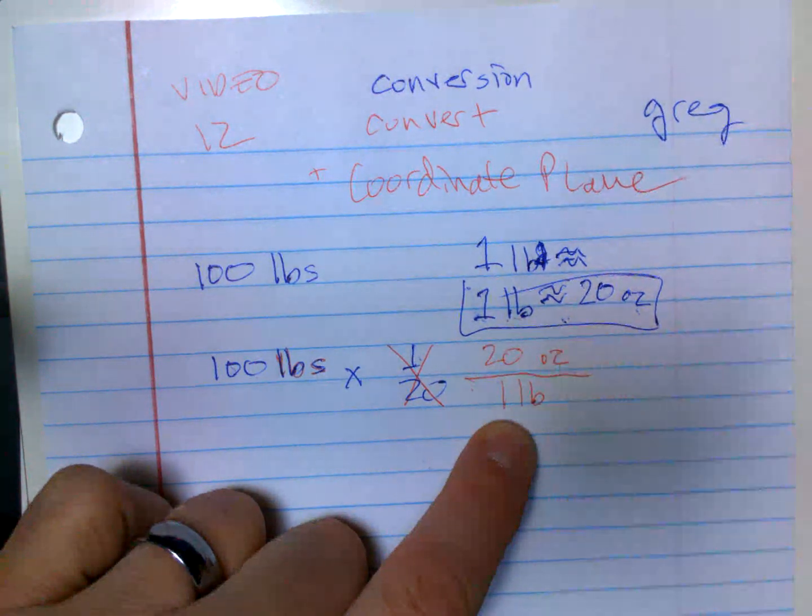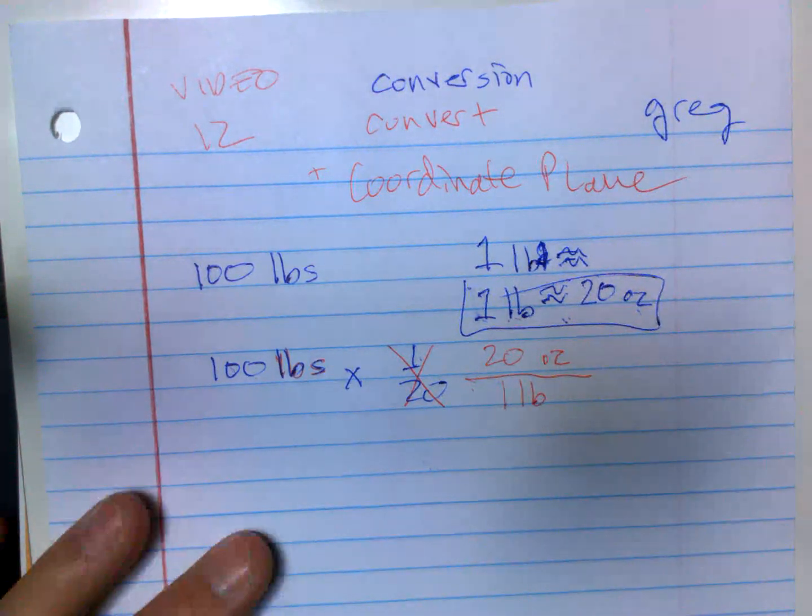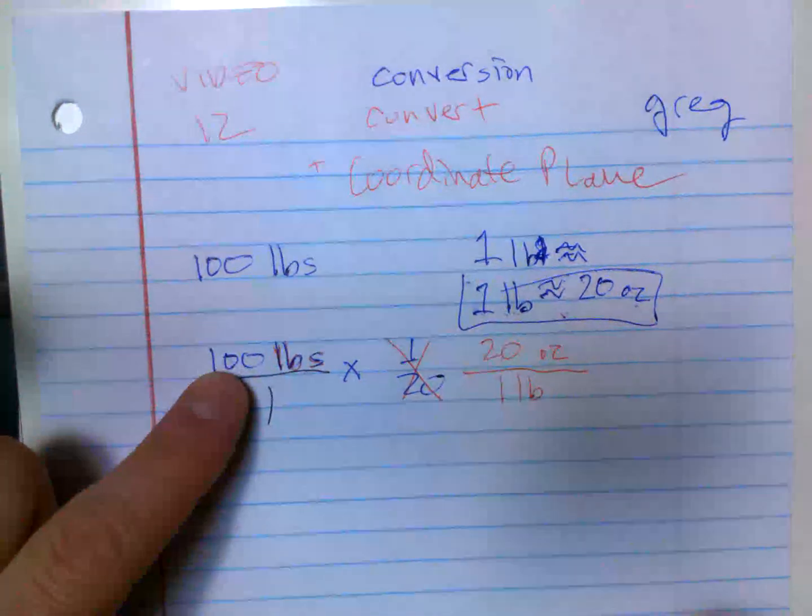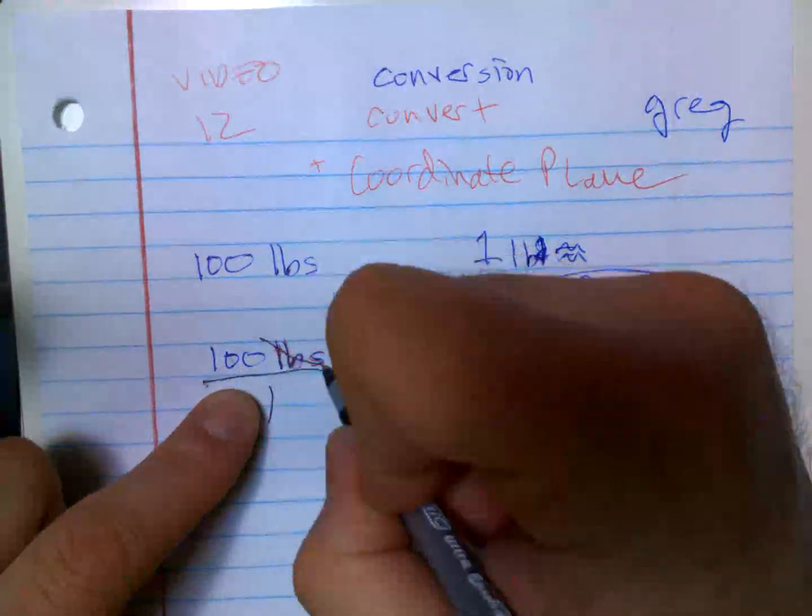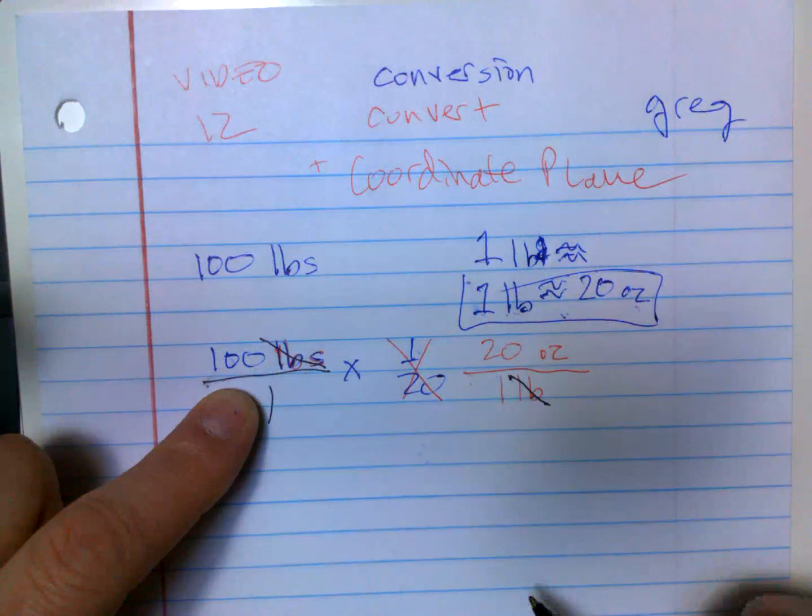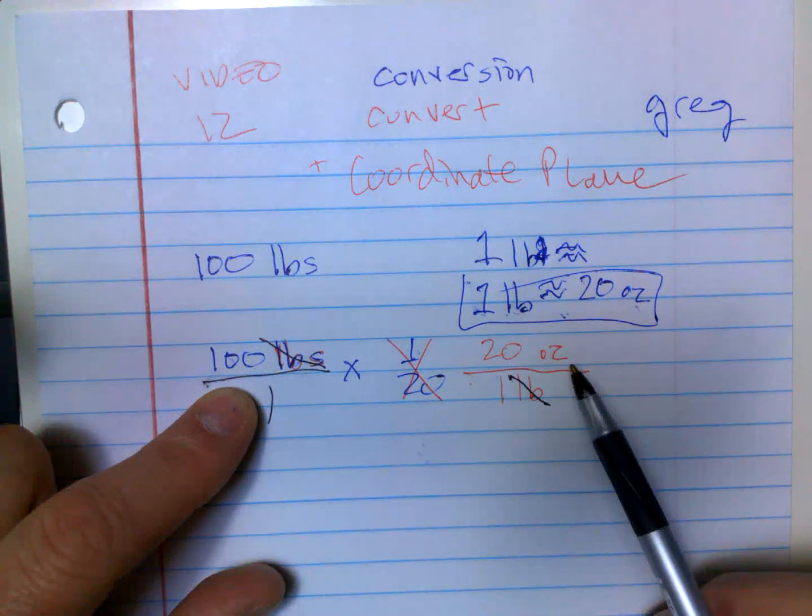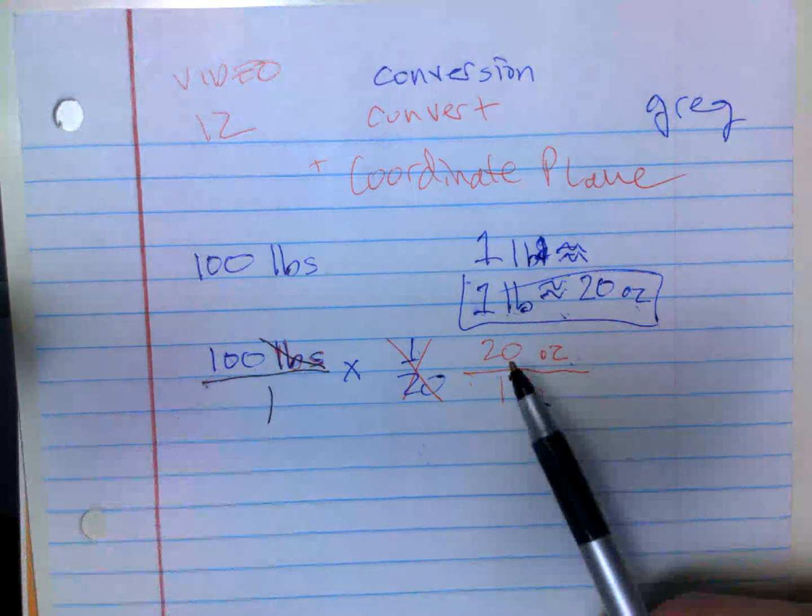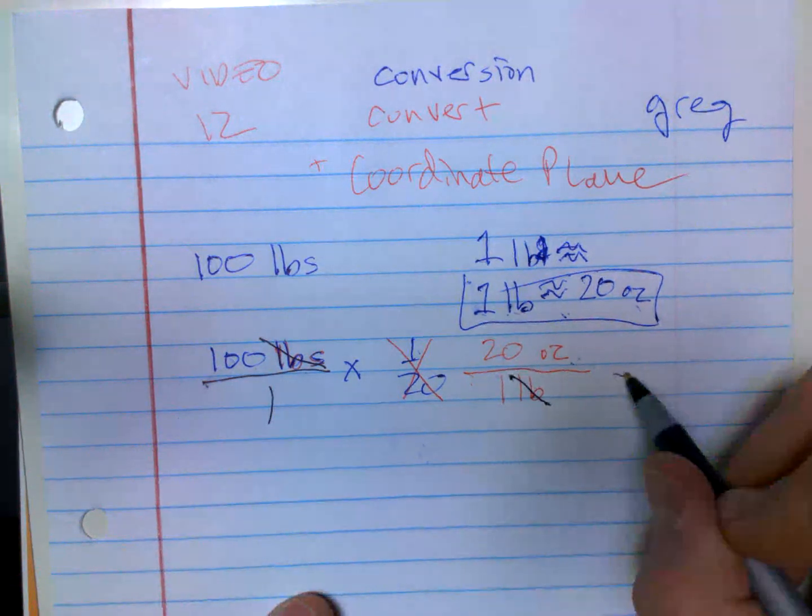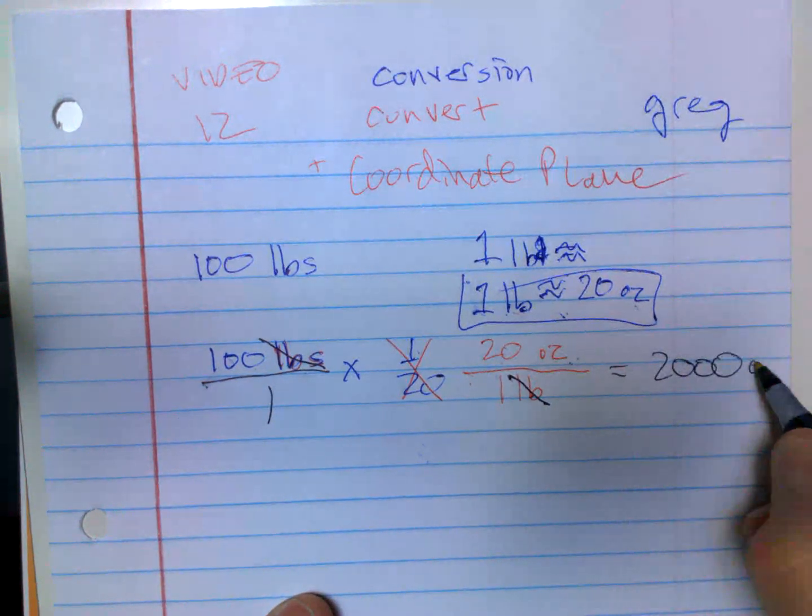Now when I multiply, I have 100 pounds over one - the whole number into a fraction. I have pounds on the top, pounds on the bottom, they cancel out. So now I'm going to be left with is ounces. So I'm going to do 20 times 100, it's going to be 2,000 ounces.